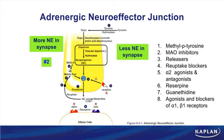The second mechanism for increasing norepinephrine in the synapse, labeled number three, is releasers of norepinephrine. A classic example is amphetamines, which cause the release of norepinephrine from the neuron — enhancing the norepinephrine in the mobile pool to return to the vesicle and cause its release. So amphetamines are classified as releasers of norepinephrine.